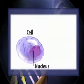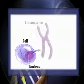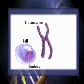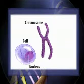Morphology of Chromosomes. The chromosomes are tiny, thread-like structures formed in the nucleus of a cell.